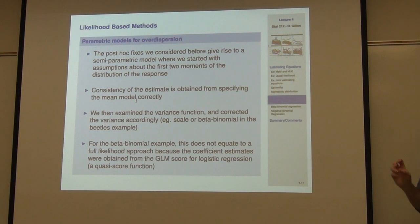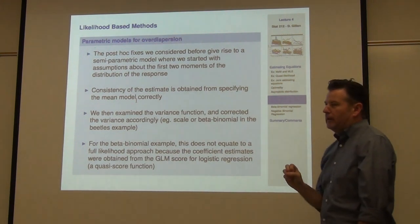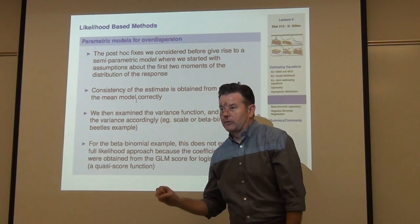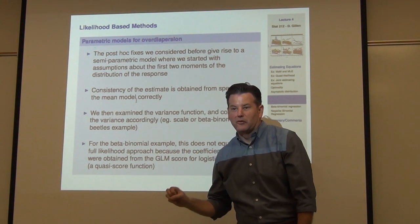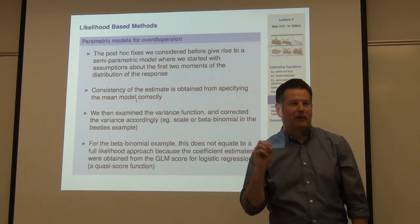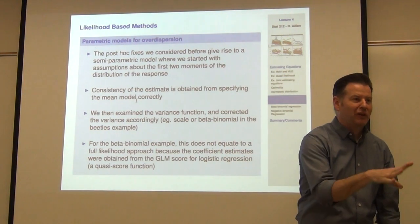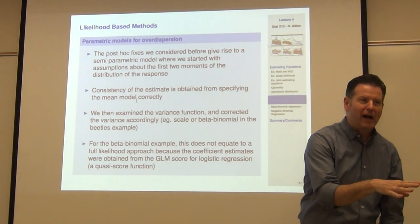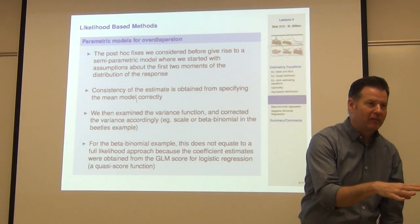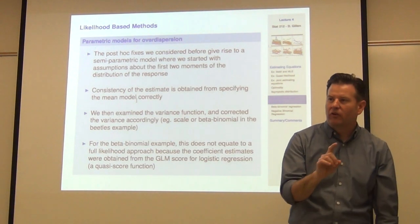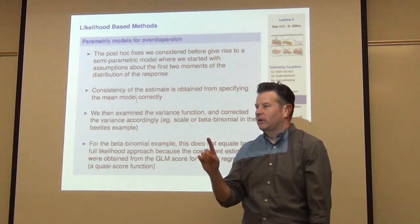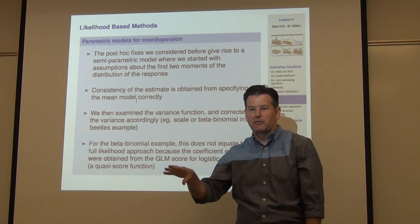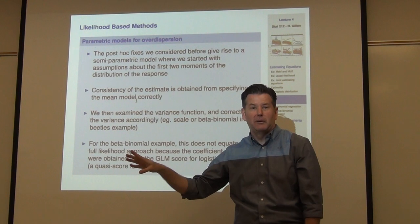Is it the true data-generating mechanism for stones? In other words, is that model going to perfectly predict the rate of stones in any individual? Absolutely not. But does it answer the association that I want to specify by adjusting for age and gender? Absolutely.